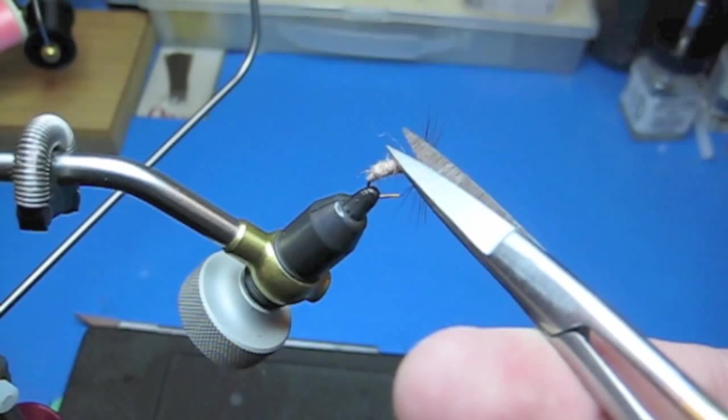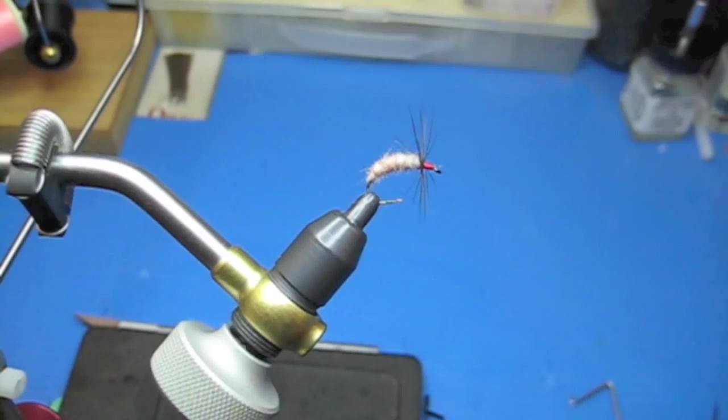Trim some of these errant fibers. And there's the fly. Again, very effective. I'm sure it's not any more effective than just the standard Utah killer bug but seems to work well for me all the time.